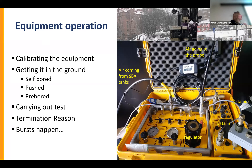Sometimes bursts happen - that flexible rubber membrane can rupture. This can be from sharps in the ground, such as gravel in a glacial till poking through the membrane, or in rock where a fracture has moved creating soft ground against the borehole wall, causing non-uniform expansion and a bulge that will likely rupture.